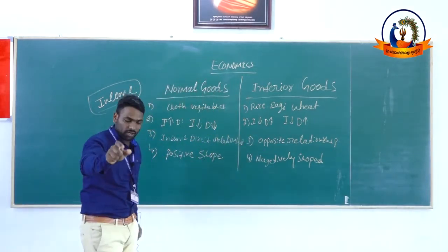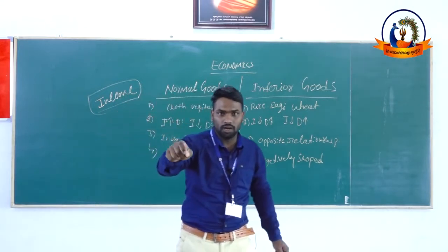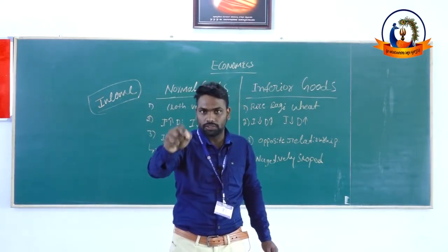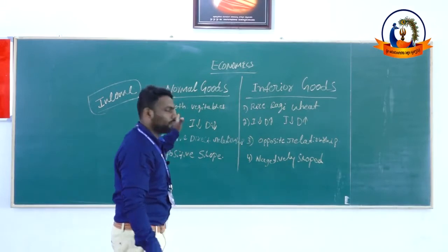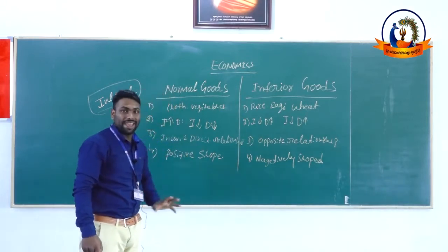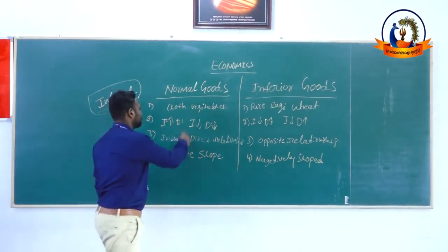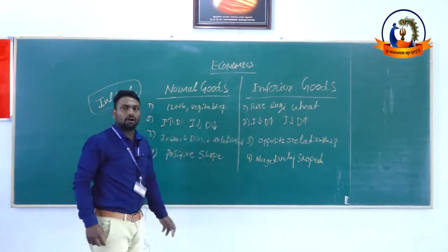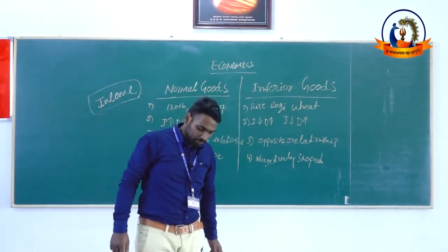The direct relationship between consumer income and demand for goods is what defines normal goods. Examples of normal goods are cloth and vegetables — these are considered normal goods.